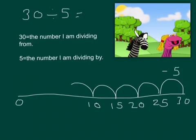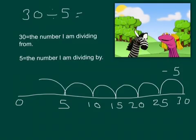And 10, subtract 5, is 5. And 5, subtract 5, is 0.